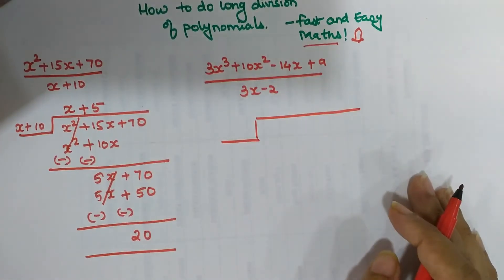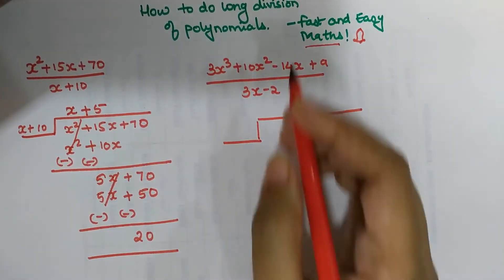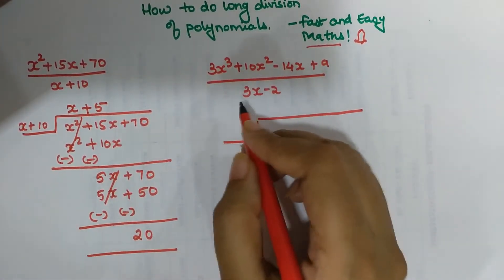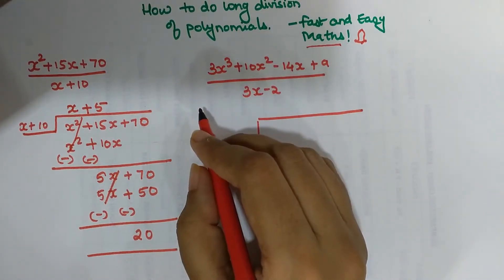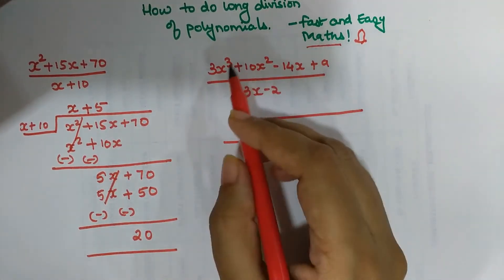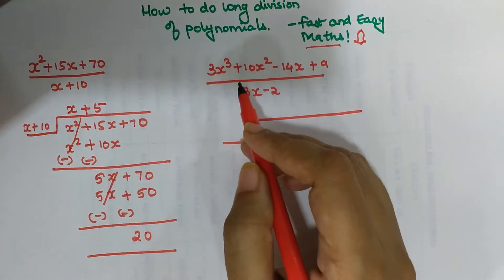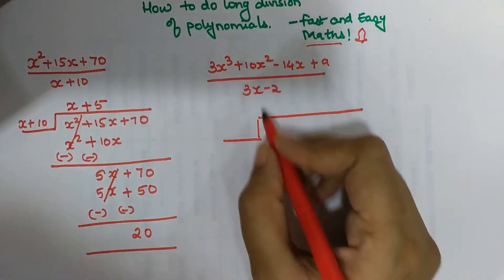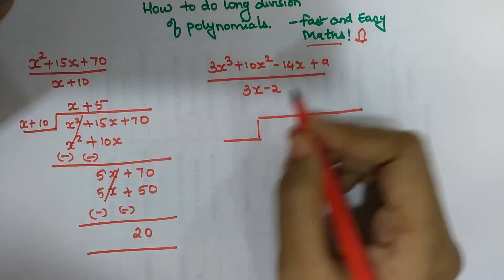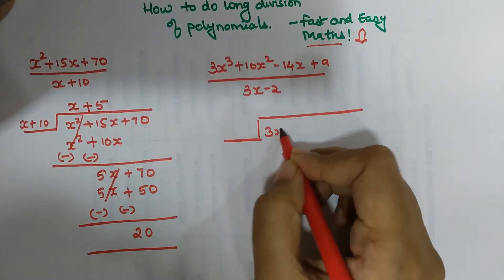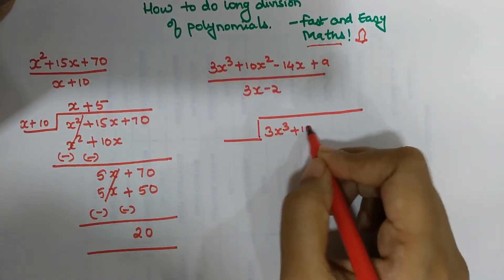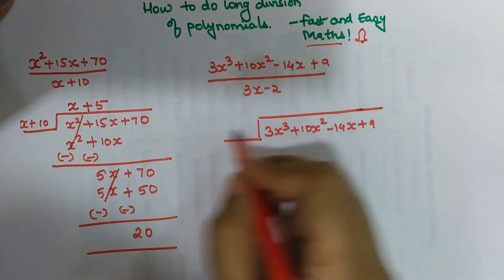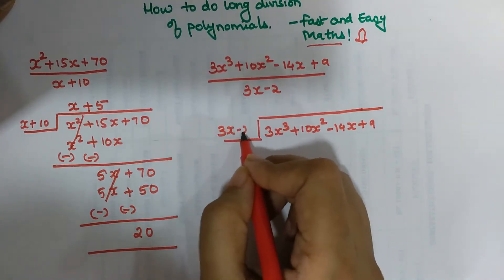An important thing to remember is that while writing the dividend and divisor you need to ensure that the degrees of x go in descending order — the highest degree is written first, then the second highest, and so on. Since my numerator is already in order, I write 3x cubed plus 10x squared minus 14x plus 9, divided by 3x minus 2.